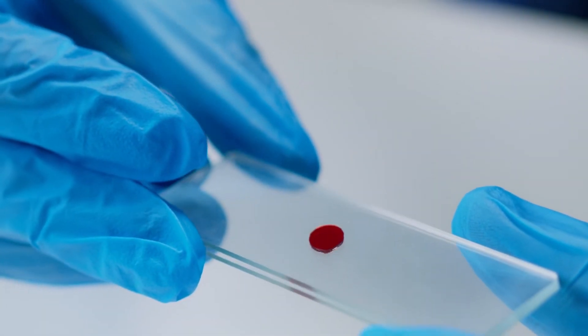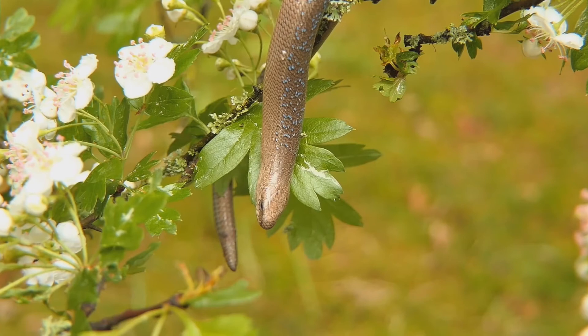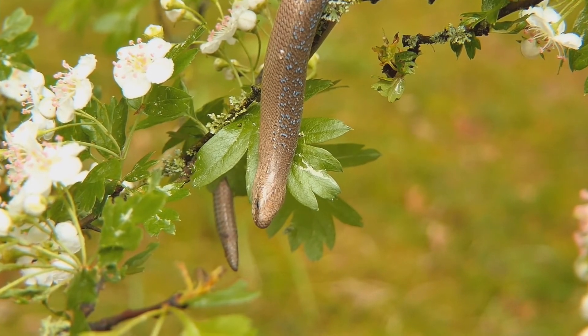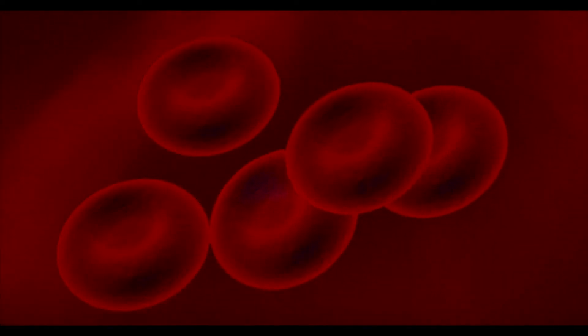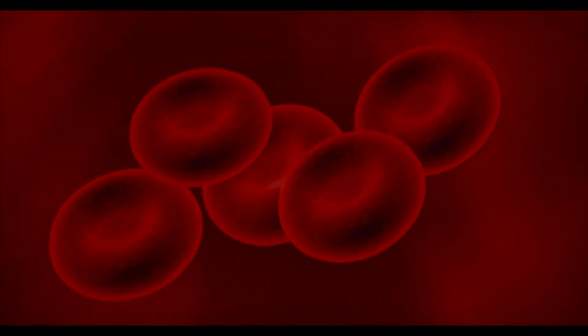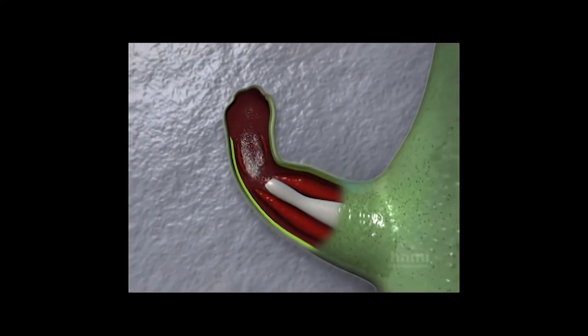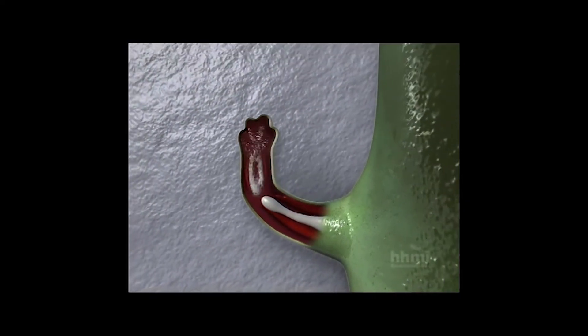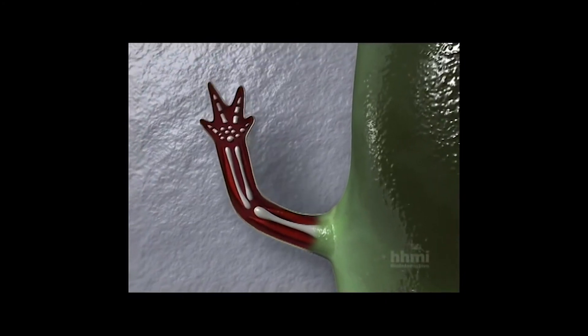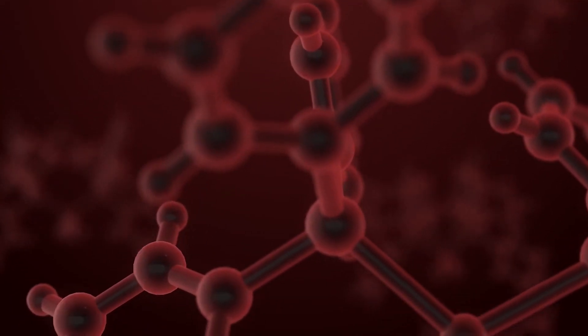When macrophages are depleted, the axolotl forms a scar instead of regenerating, just like mammals. The recent research found that although macrophage signaling in the axolotl and in the mouse were similar when the organisms were exposed to pathogens such as bacteria, funguses, and viruses, when it came to exposure to injury, it was a different story. The macrophage signaling in the axolotl promoted the growth of new tissue, while that in the mouse promoted scarring.